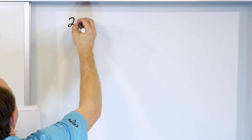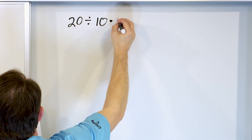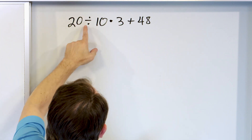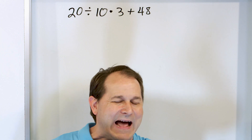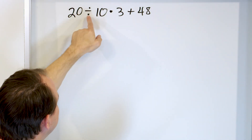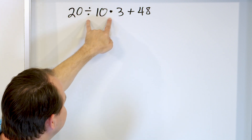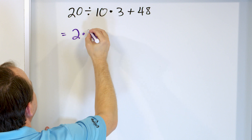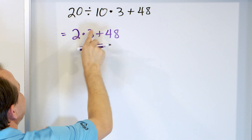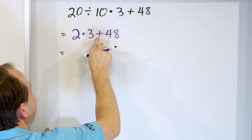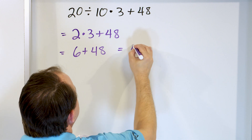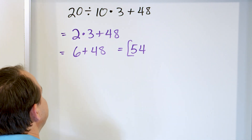Let's take a look at 20 divided by 10 times 3 plus 48. First, check for parentheses — none. Next priority is multiply and divide. We have division and multiplication here; addition will come last. Division and multiplication are at the same level, so we read left to right: 20 divided by 10 first, which is 2. Rewrite the problem. Then 2 times 3 is 6. Finally, 6 plus 48 is 54. That is the final answer.